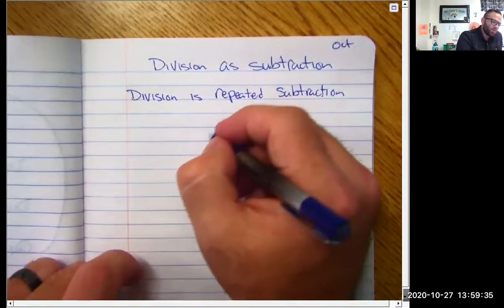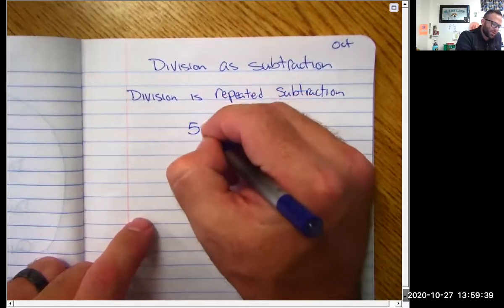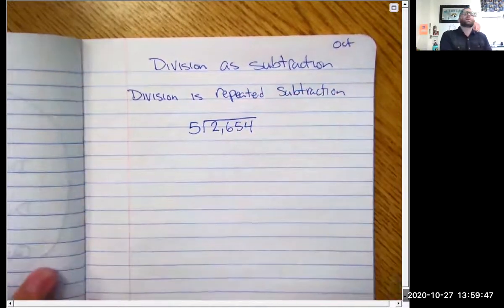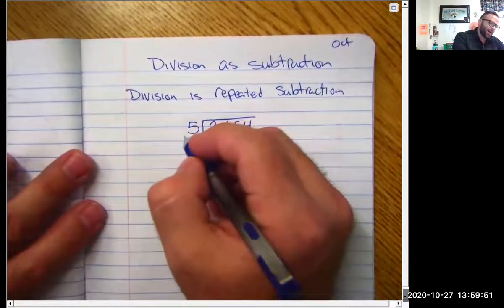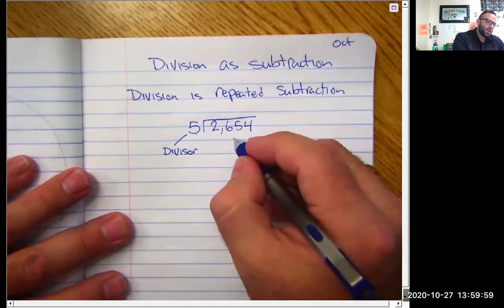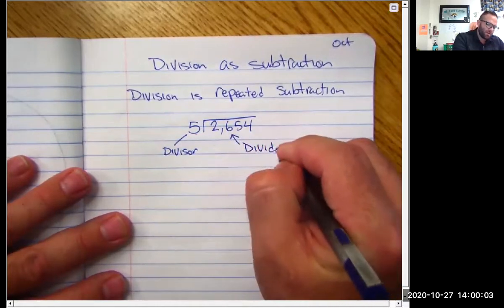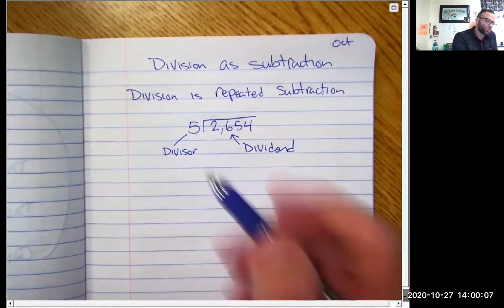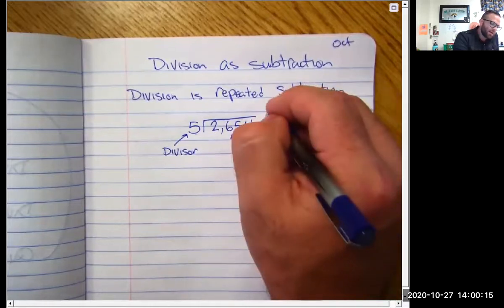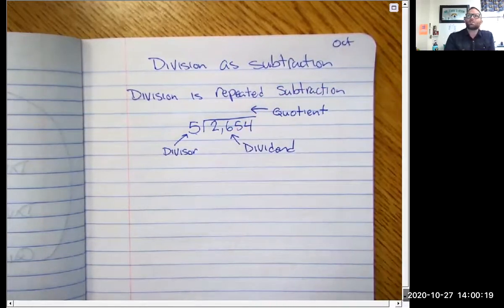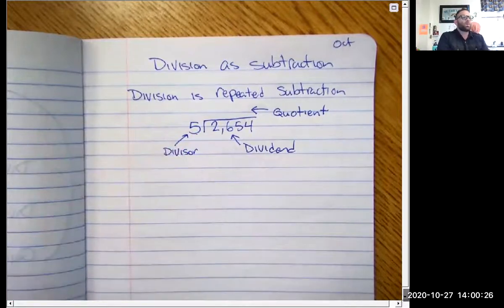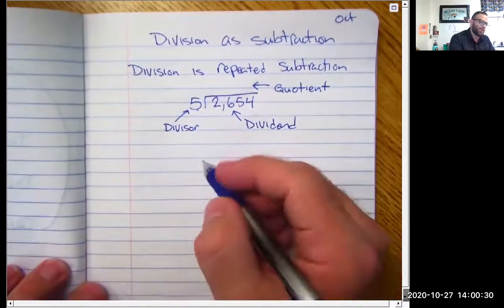Now remember, I'm going to go ahead and set up a problem for us. Five is going to be our outside number — here's our stage — and we're going to have the number 2,654. The divisor is five — we talked about that two days ago. This right here is our dividend; this is the number to be shared. What we're trying to find out is the number up top, which is our quotient — this is the number that each one of those groups is going to receive. This is how I did division, how your parents did division as long division, but the way I'm going to teach it is going to be a little bit easier.